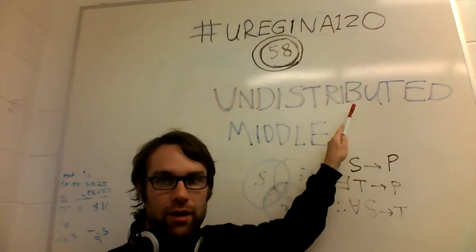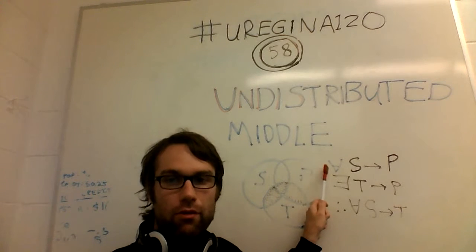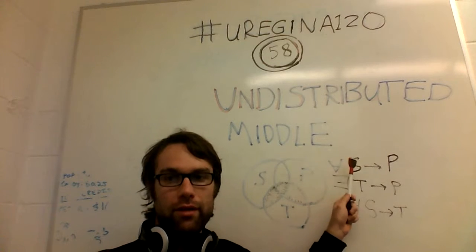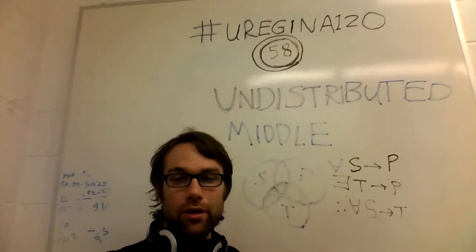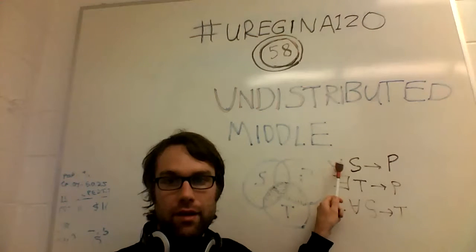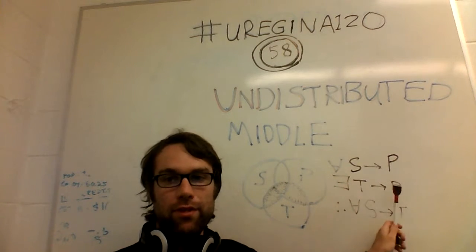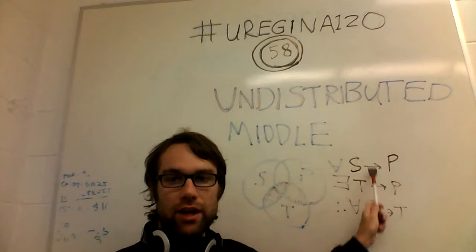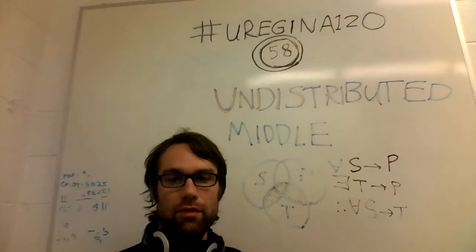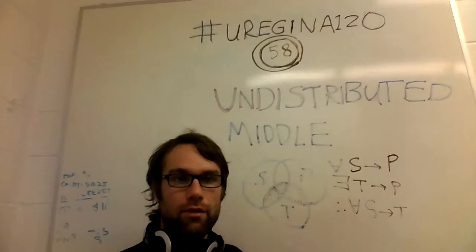When we say 'distributed,' all that means is that there's a quantifier attached giving meaning to the term we're talking about. So in this case, S is quantified, T is quantified, but this middle term P doesn't actually get quantified at all. There's a missing piece of the puzzle that we haven't filled out when we make arguments of this form.